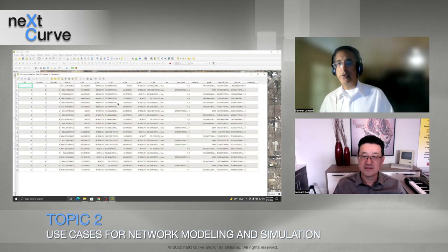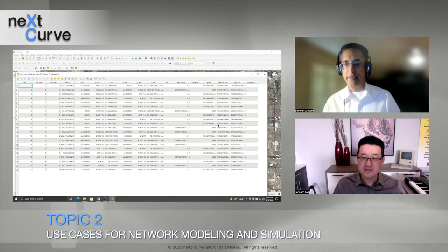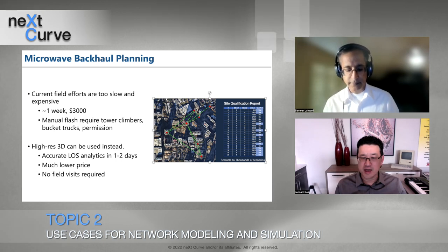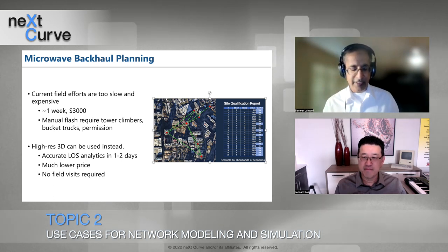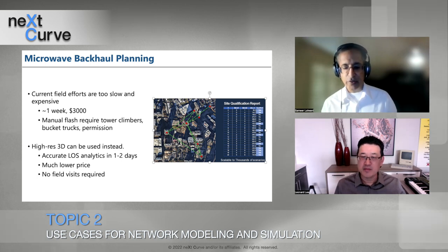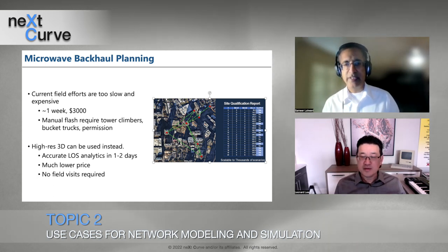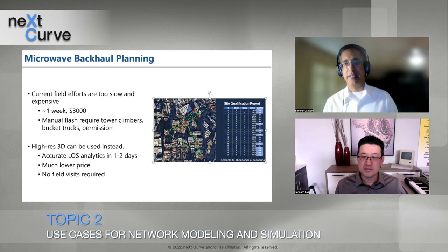Similar to what we had before, we can create a detailed report showing every single link that works and those that don't, as red or green links. For each link, we're able to give you a report of what the path loss is, what additional rain margin you need to add, or gas losses if relevant to that frequency band.